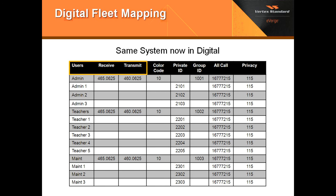As you can see, we've got the users and transmit/receive frequencies are all the same. You're going to notice we have color code, which is 1 through 15 — there is no actual color. For this exercise, I selected 10 for the color code. You'll notice that each of the groups use the same color code; the color code only identifies which repeater. So in a way it does take the place of the subaudible, but not by itself. In addition, you'll also use your group IDs to divide up your channels.